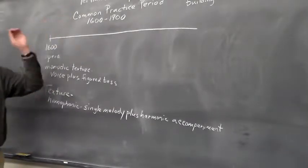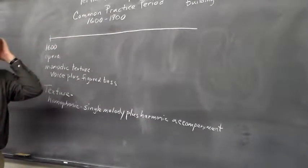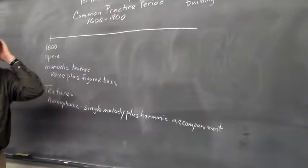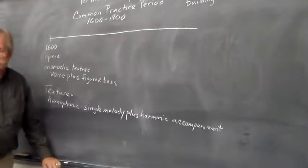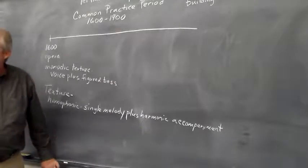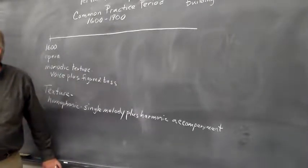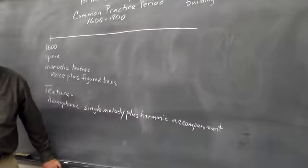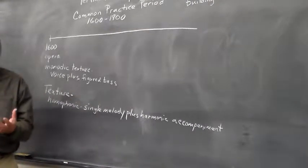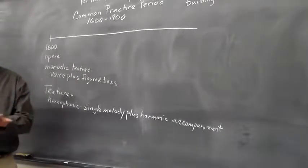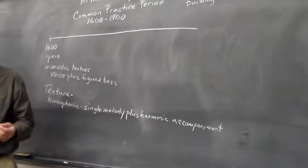That's where the term 'common practice' comes from, and this lasts until the 20th century. With the beginning of the 20th century, we start to see a rejection of the idea of tonality. By the 1920s, with Arnold Schoenberg, you start to have systems that do away with the idea of tonic, where all twelve tones are treated equally.